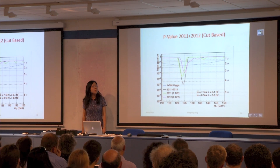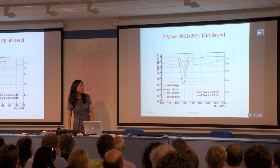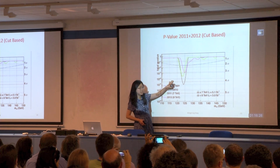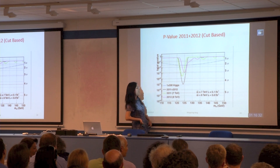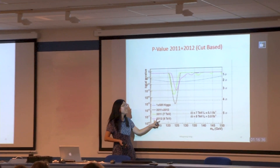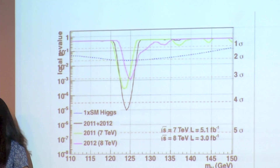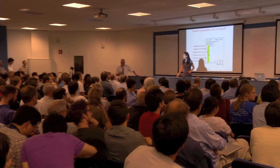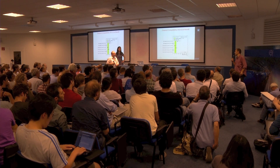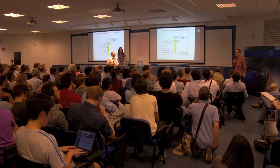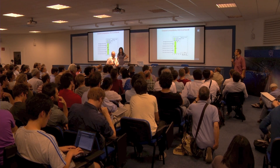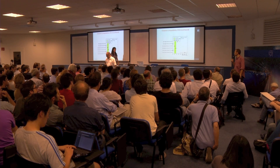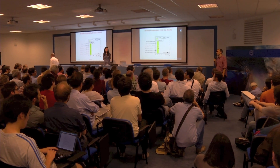Okay, so this is the P value of 2011 and 2012. This black one is the combined — you can see it's beyond four sigma. The green is for the 7 TeV, and the magenta is for the 8 TeV. The plot shows fundamentally that we have consistent 2011 and 2012 data, which both show an excess of about three standard deviations at about 125.